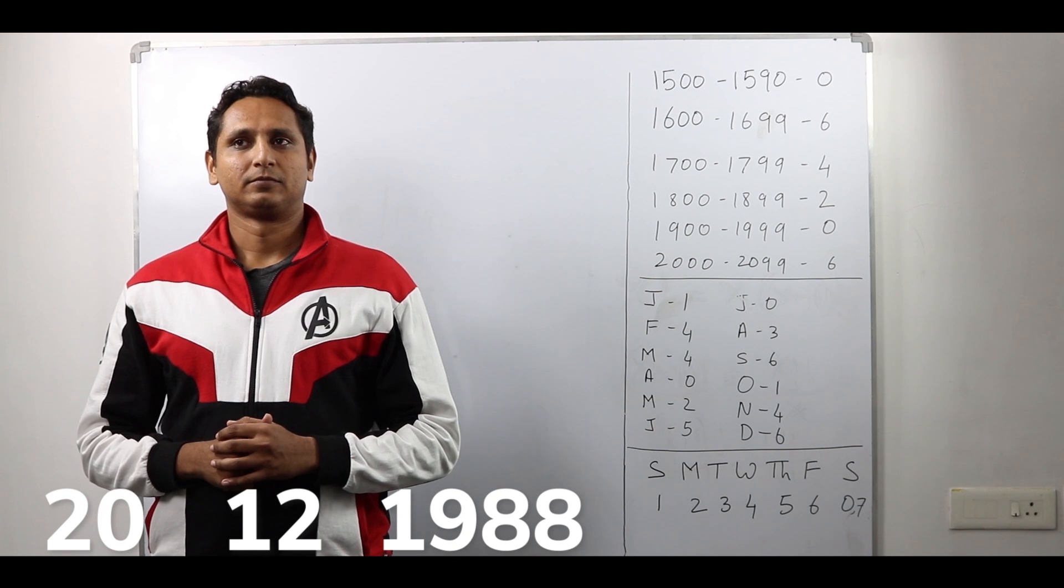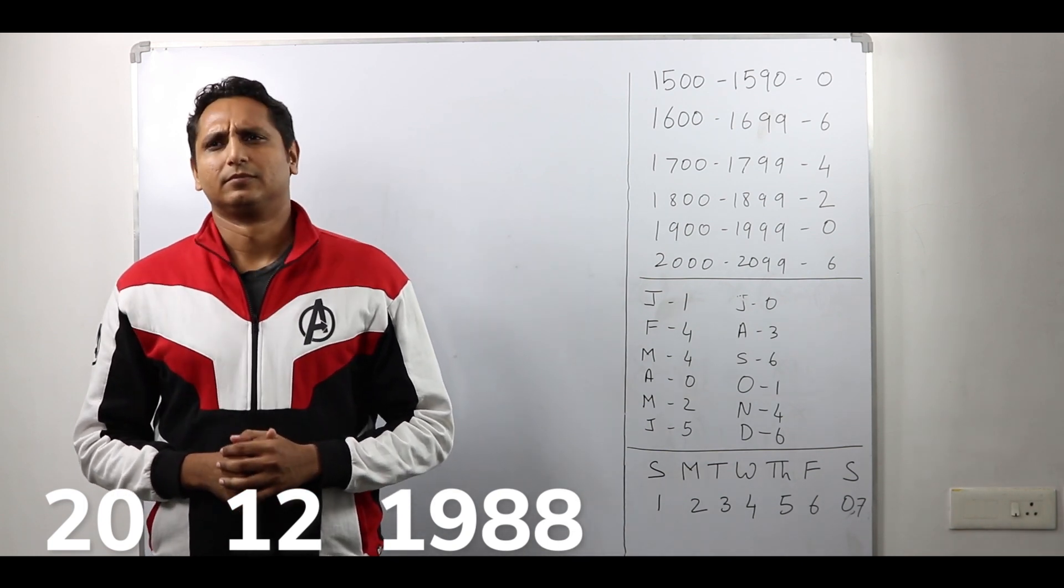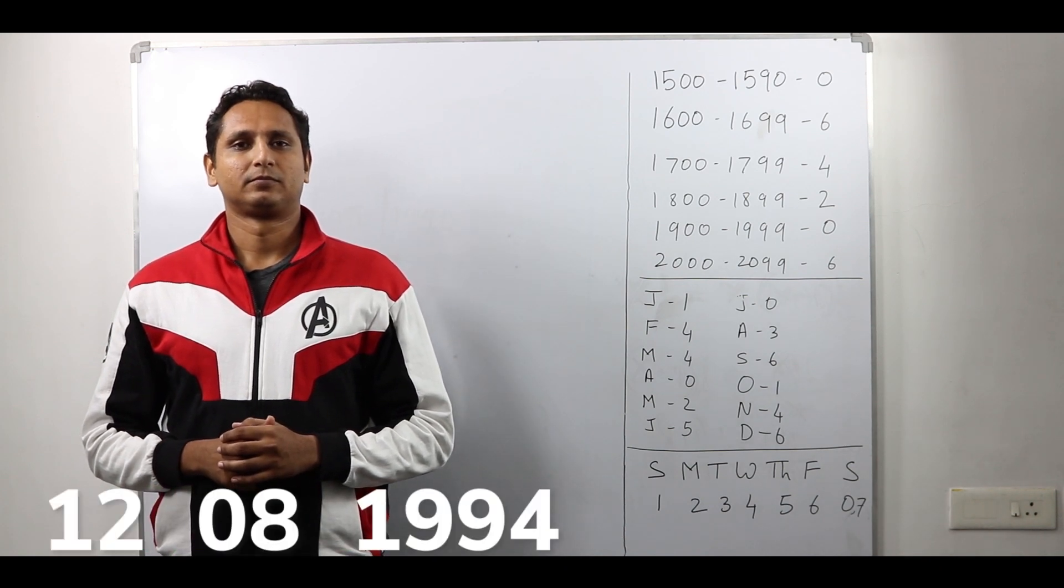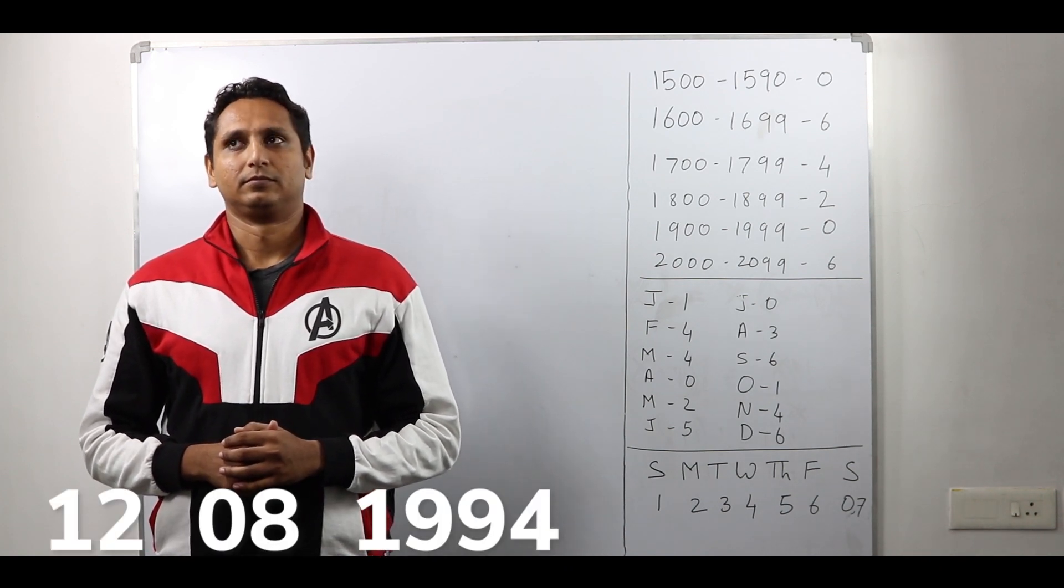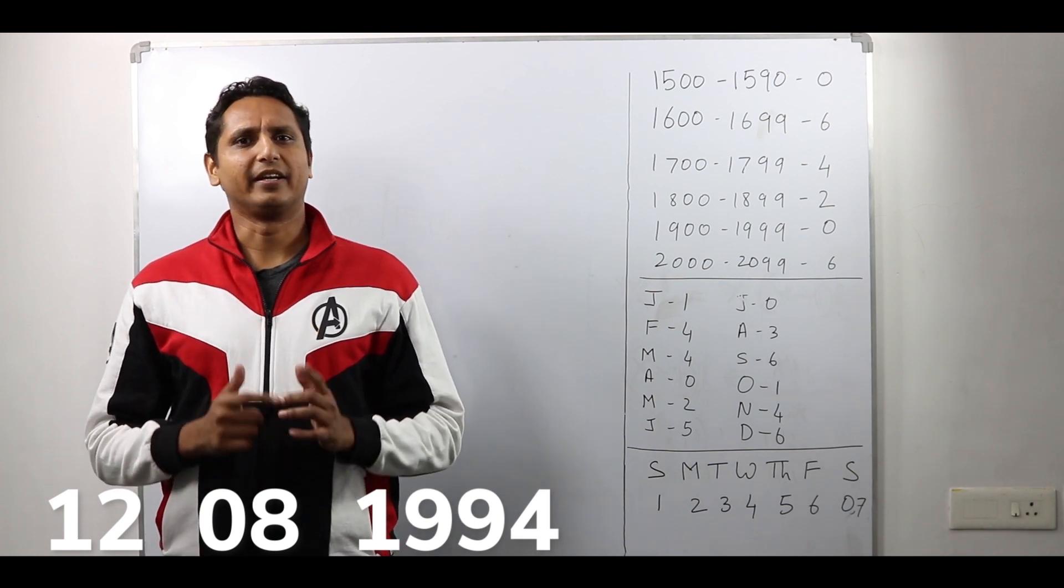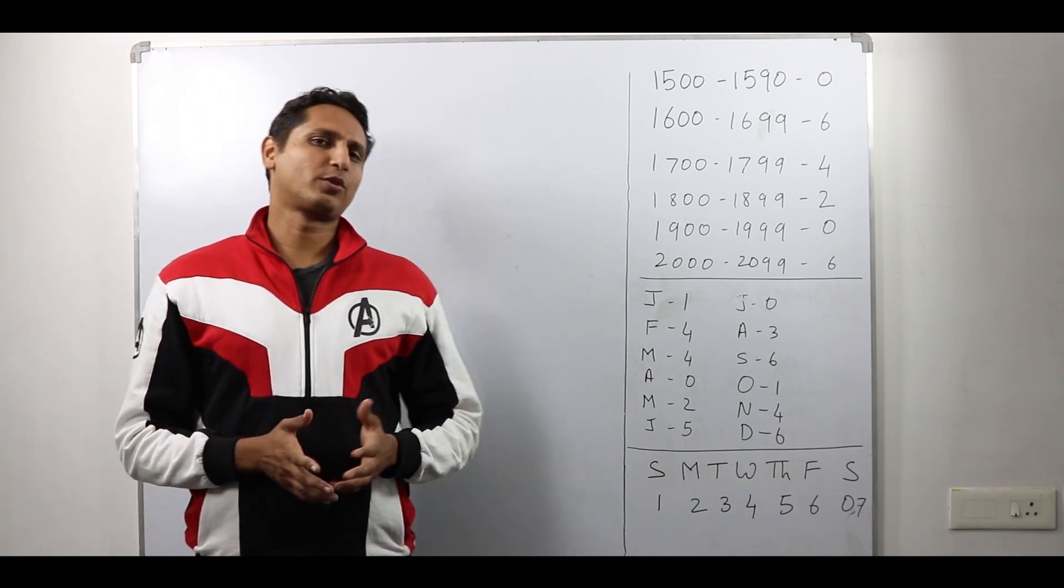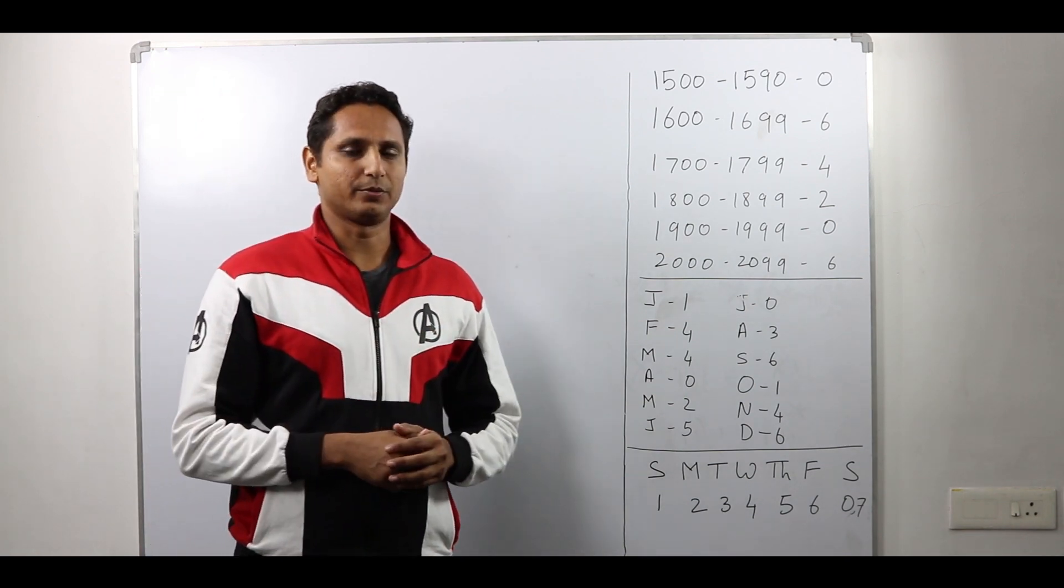2012-1988. Tuesday? That's right. 12-8-1994. Friday? That's right as well. So how was I able to calculate this quick? Let me explain it to you.